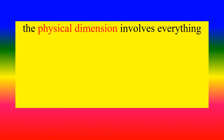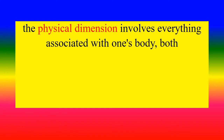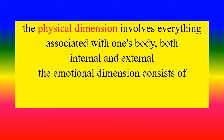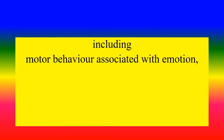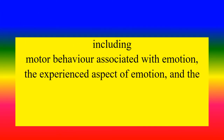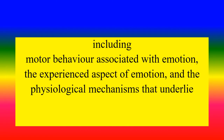The physical dimension involves everything associated with one's body, both internal and external. The emotional dimension consists of affective states and feelings, including motor behavior associated with emotion, the experienced aspect of emotion, and the physiological mechanisms that underline emotion.